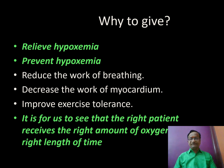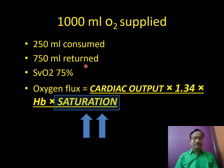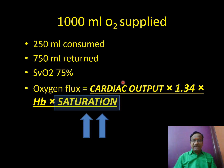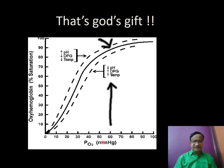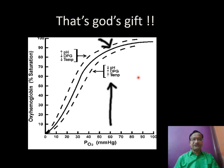Oxygen delivery: 1000 ml is supplied, 250 ml is consumed, 750 ml is the reserve — that is a mixed venous saturation of 75%. Oxygen flux equals cardiac output × 1.34 × hemoglobin × saturation. Saturation is very important here. At 60 mmHg we get 90% saturation, and even at 80 mmHg it is only 93% — that is why saturation is so critical in the oxygen flux equation. That's God's gift.